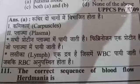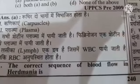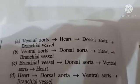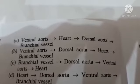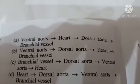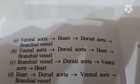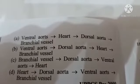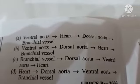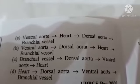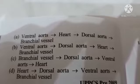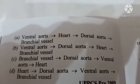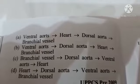Next question: the correct sequence of blood flow in heart in Amphioxus (Lancelet) is — Option A: ventral aorta to heart to dorsal aorta to branchial vessels, Option B: ventral aorta to dorsal aorta to heart to branchial vessels, Option C: branchial vessels to dorsal aorta to ventral aorta and heart, Option D: heart to dorsal aorta to ventral aorta to branchial vessels. The correct answer is Option D: heart to dorsal aorta to ventral aorta to branchial vessels.